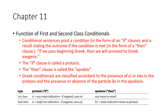For first class conditionals, if you have ei plus any tense indicative — negated with ou — and in the apodosis any tense or mood, that is first class. Second class uses ei plus an imperfect or aorist indicative — negated with mē — with an plus the same indicative tense in the apodosis. So, if you see ei plus indicative and no an in the apodosis, it's first class. If you see ei plus imperfect or aorist indicative with an in the apodosis, it's second class.